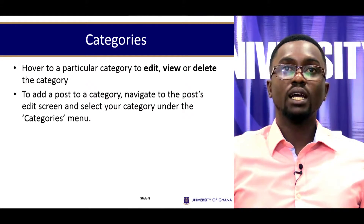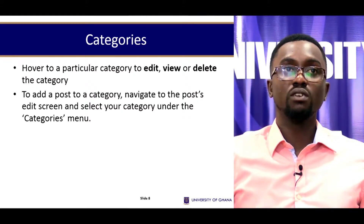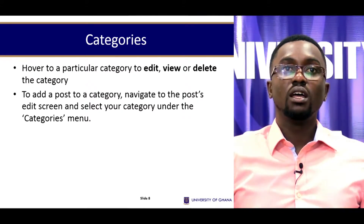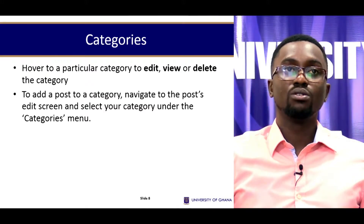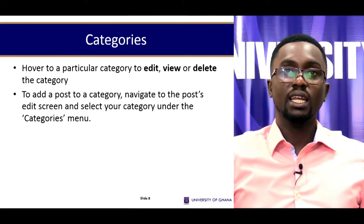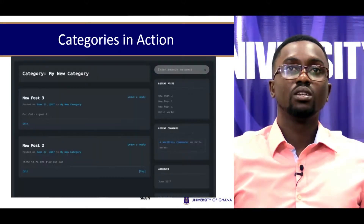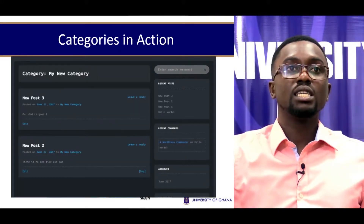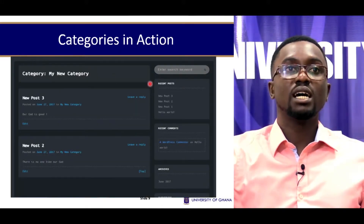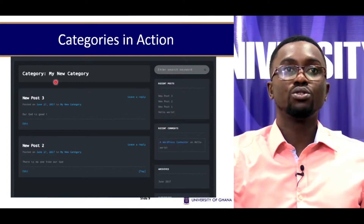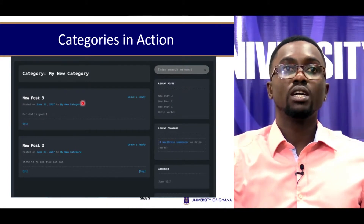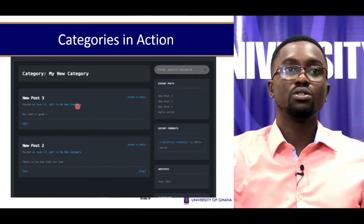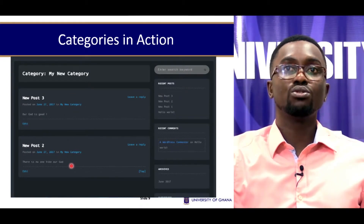To add a post to a category, navigate to the post screen and then select your category under the categories menu, where you can edit. Here are categories in action — we have New Post Three in my new category, and New Post Two over here.